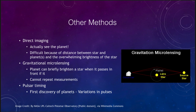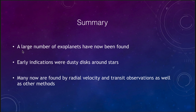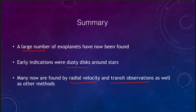To summarize: we have now found thousands of exoplanets. The early indications were the dusty disks around stars, which seemed to show that planetary systems were forming. But now we have used primarily radial velocity and transit observations to detect many thousands of planets that we know exist outside of our solar system. Just a few decades ago, we didn't know of any, and now we know of well over 3,000 planets outside our solar system. That concludes our lecture on the detection of extrasolar planets. We'll be back next time for another topic in astronomy — have a great day, everyone.